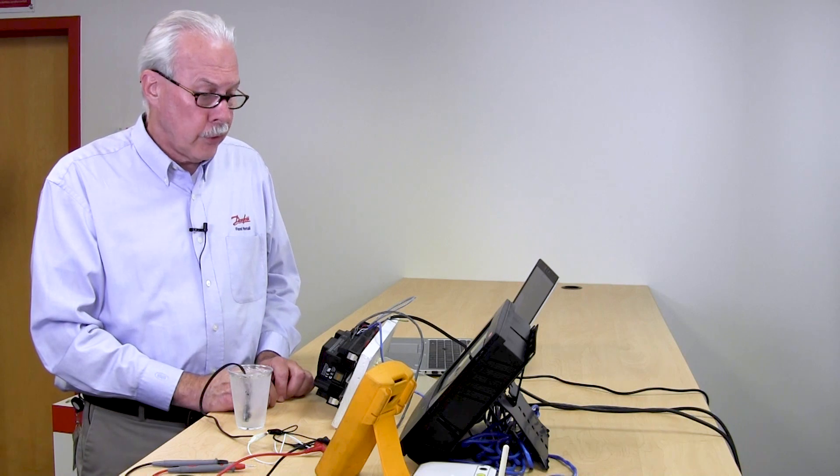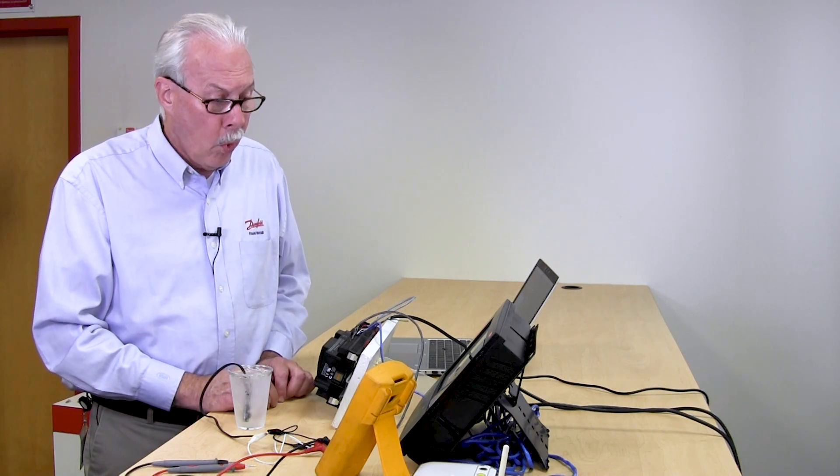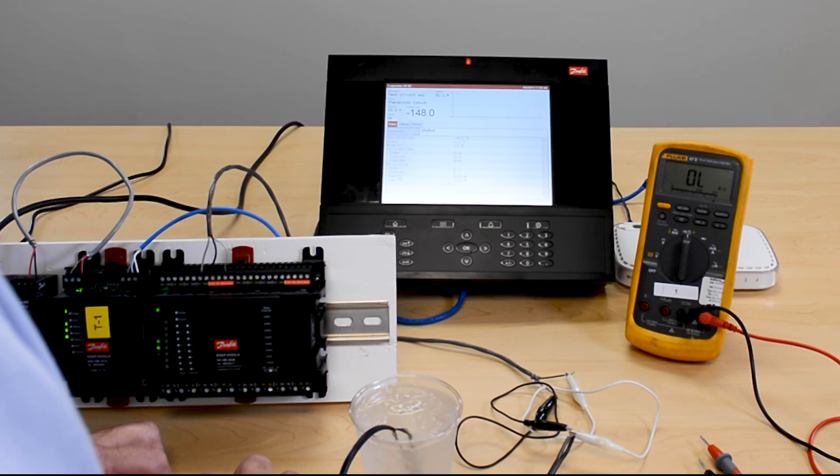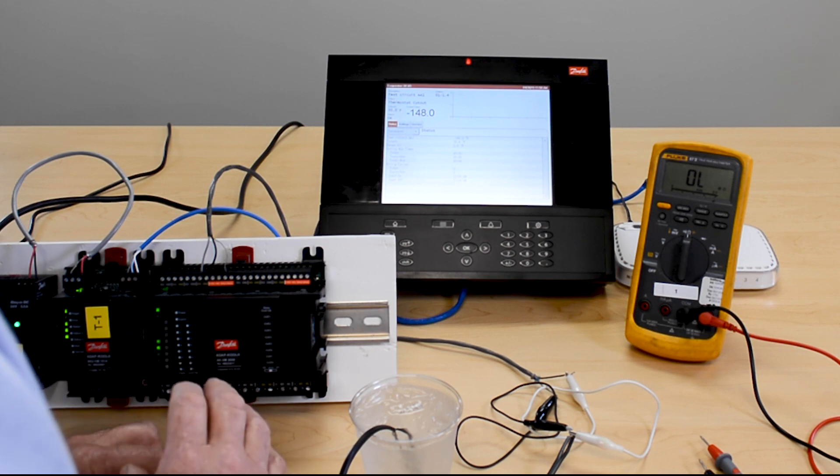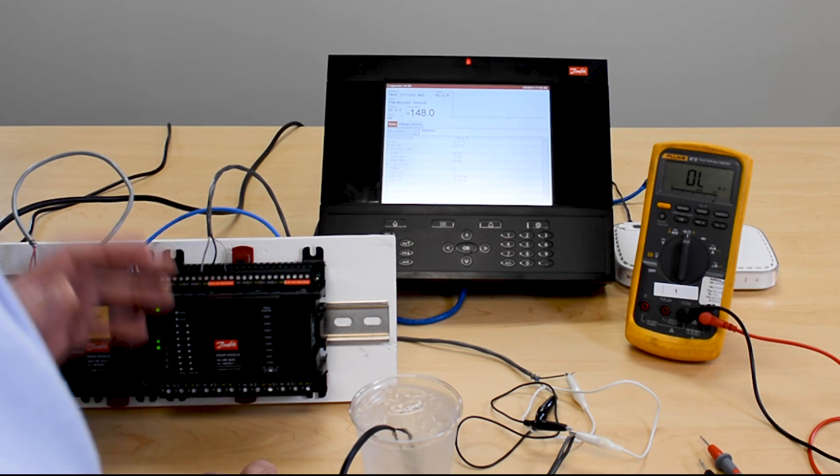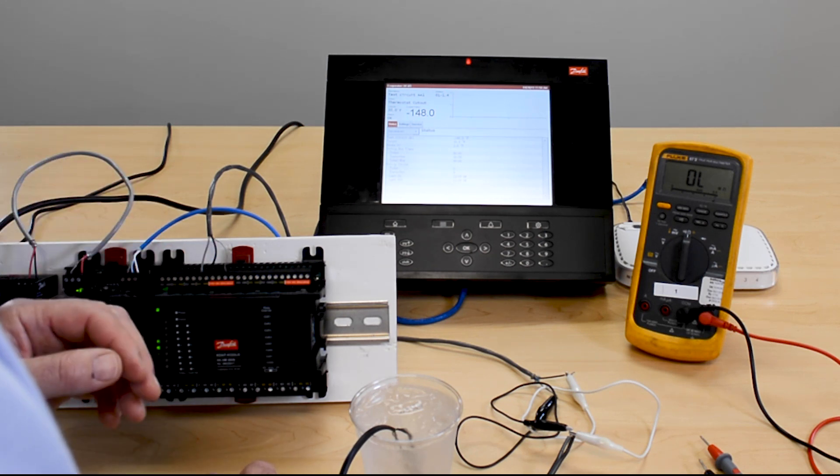So now we're going to start troubleshooting to find out why we have a short. We've come into the store and see that we have minus 148 on the display, telling us that somewhere from the system manager down to that case, we have a shorted condition. The best way to troubleshoot is to isolate your problem and possibly divide this troubleshooting into two pieces.